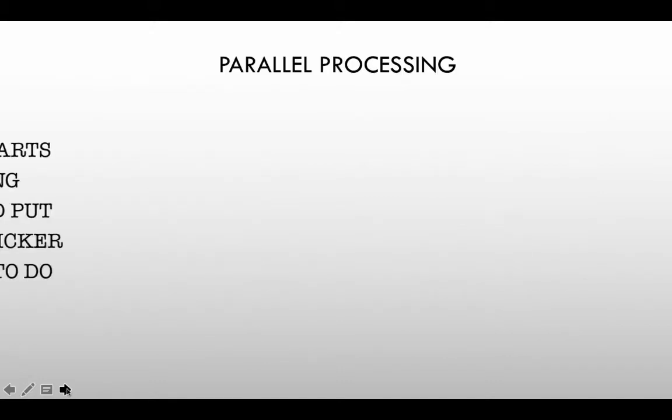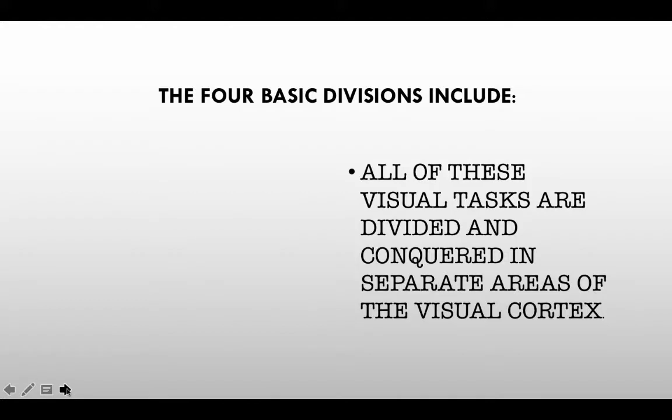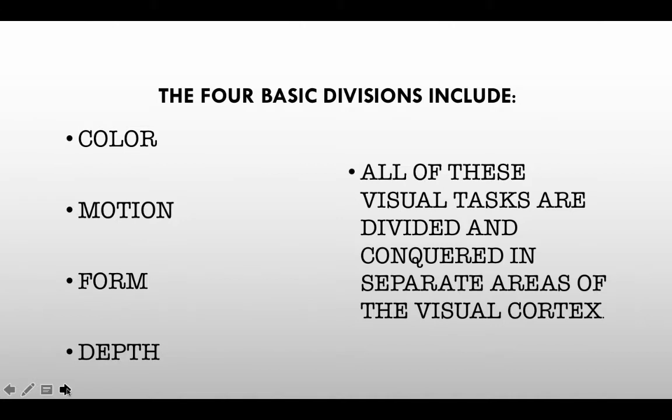So with parallel processing, when we have all these parts completed, all that information is processed in a higher, more complex functioning area of the visual cortex where recognition can take place. We don't do it like a computer does, which is linear — because if you lose one aspect, you lose it all. When your computer freezes, it's not very pleasant. But in visual processing, if we lose one part, we might still be able to function and we just lose that one part. So all these tasks are broken down into simpler processes.